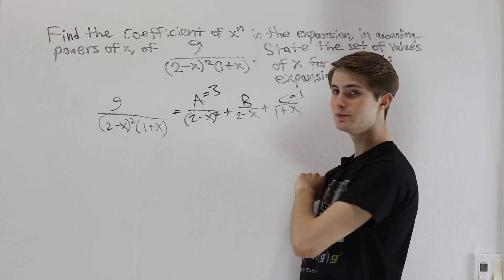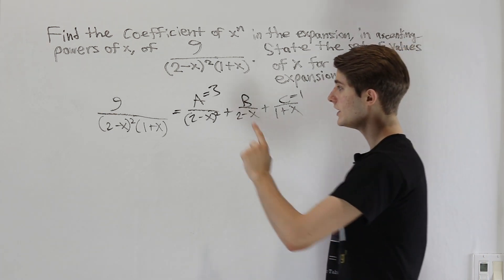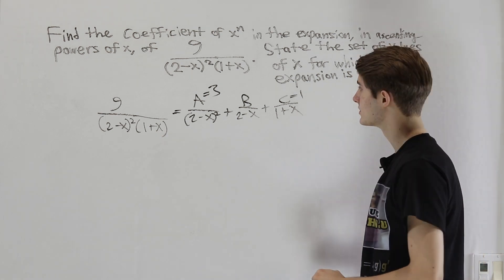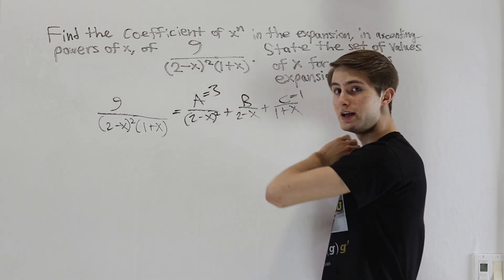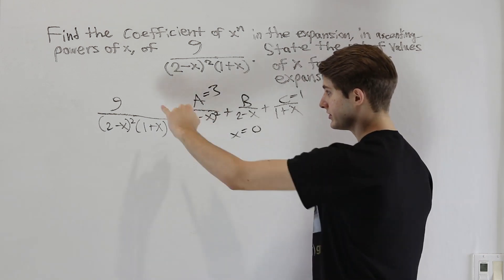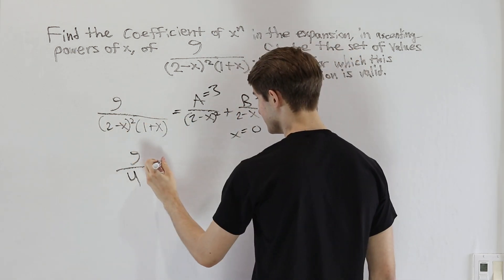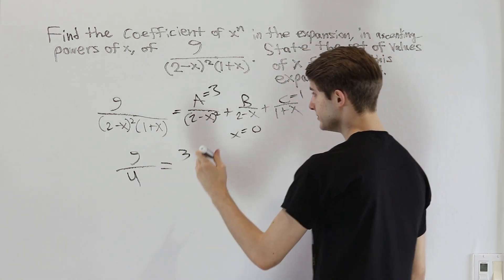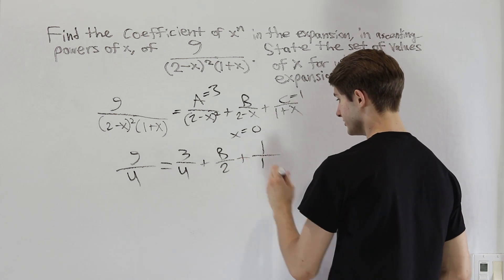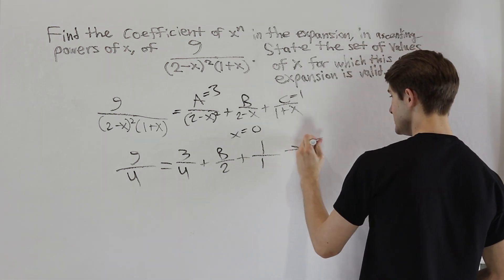For B over (2 minus x), we can't use the cover-up method, but since we know A and C, we can plug in a convenient value of x. Choosing x equals 0: the left side gives 9 over (2 squared times 1), which is 9/4. The right side gives 3/4 plus B/2 plus 1. Solving this basic algebra equation, B equals 1.